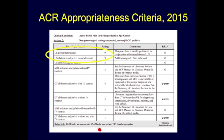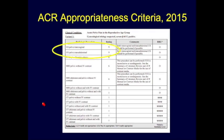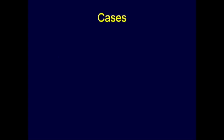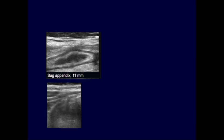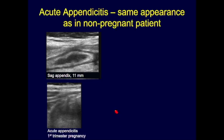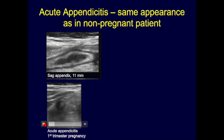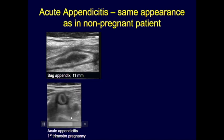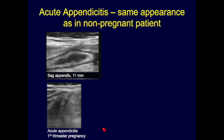The ACR recommends ultrasound as the first-line test for pregnant patients with acute pelvic pain, whether the suspected etiology is gynecologic or non-gynecologic. Acute appendicitis is the most common cause of an acute abdomen during pregnancy — it appears the same as in a non-pregnant patient: thickened appendix, increased echogenic submucosa, and increased echogenicity of adjacent fat.